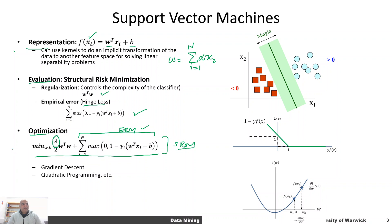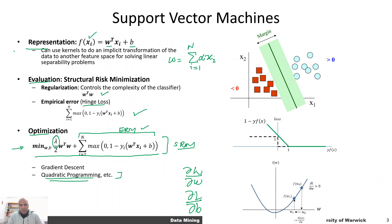We can solve this optimization problem either through gradient descent — taking the derivative of the objective function L with respect to the weight vector and the bias, then minimizing by taking steps opposite to the direction of the local gradient. We can also use other optimization methods such as quadratic programming. Typical SVM solvers use quadratic programming or a variant of it. You can use any optimization technique — even a quantum computer could solve this problem using quantum annealing, giving what is called a quantum support vector machine.